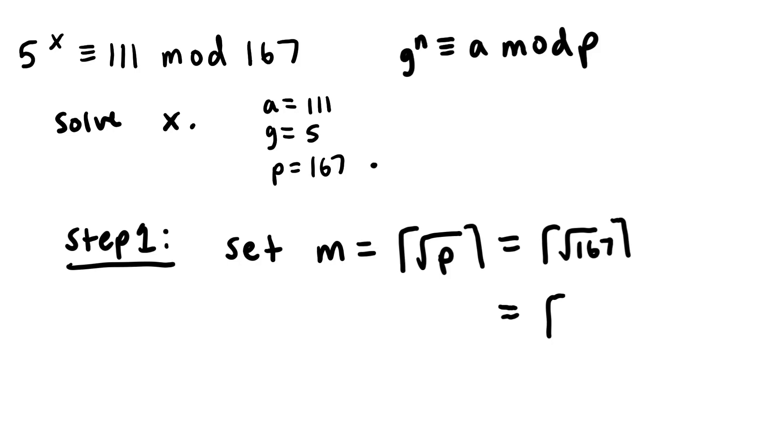And if you go into a calculator and you do 167 square rooted, you get 12.9. So the greatest integer in this case is 13, since you want to round up to the greatest integer. So that is our m value.